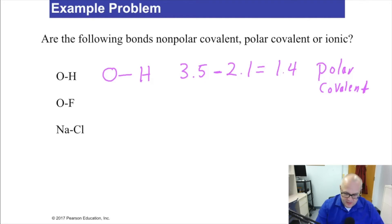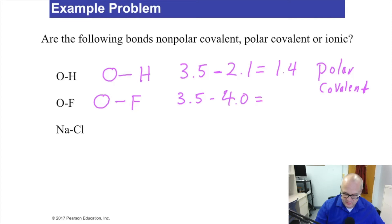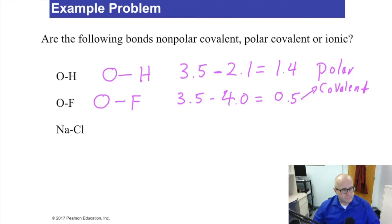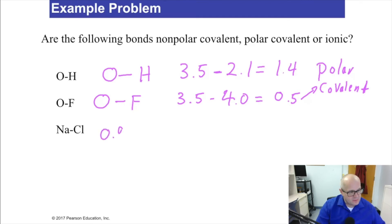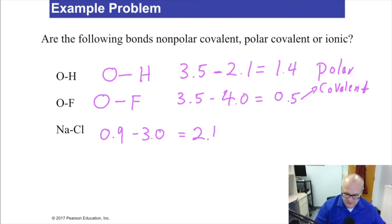What about oxygen and fluorine? Oxygen is 3.5, fluorine is 4.0, for a difference of 0.5 — that's polar covalent. Now sodium: sodium is 0.9. Using absolute values here, chlorine is 3.0, for a difference of 2.1 — and that is ionic, because it's greater than 1.8.